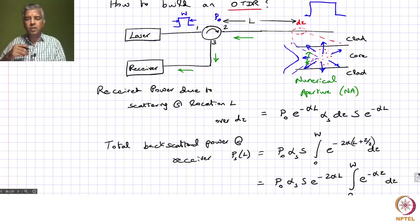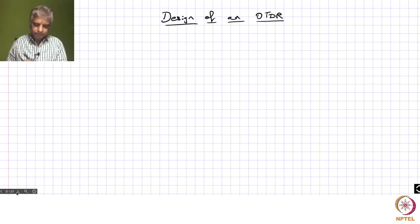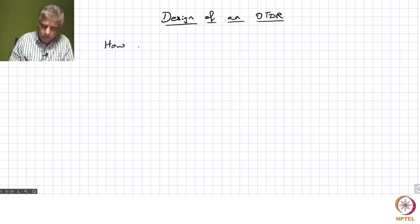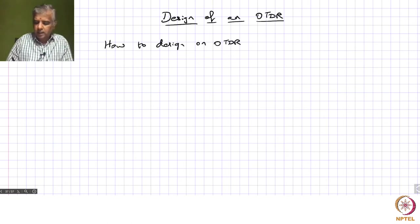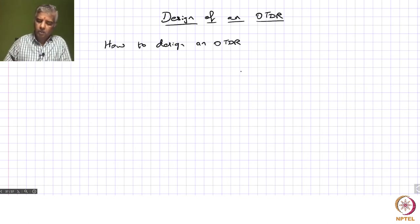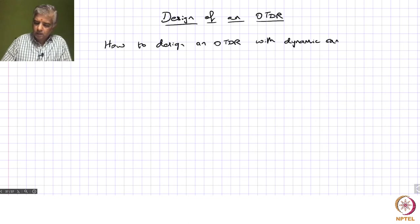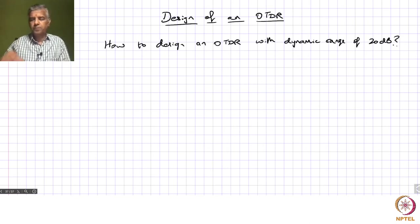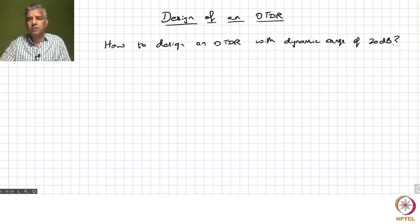So the question is: how do you design an OTDR instrument for a given application? We will ask how to design an OTDR — and when you talk about design, you need to adhere to some specifications. One key specification for an OTDR is the dynamic range. So, how to design an OTDR with a dynamic range of 20 dB? The dynamic range is basically the range of power values that we can detect.